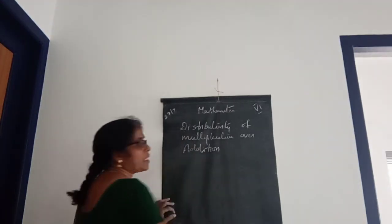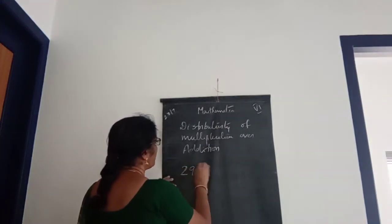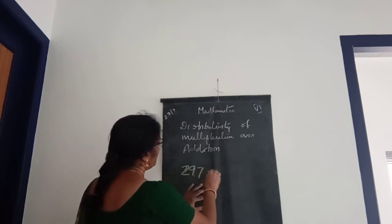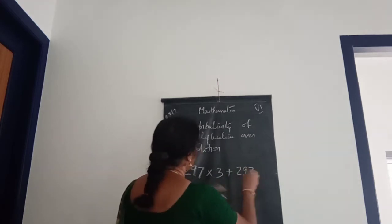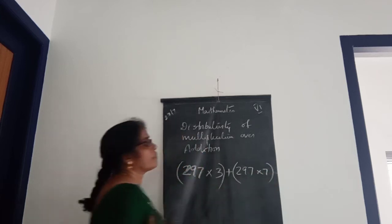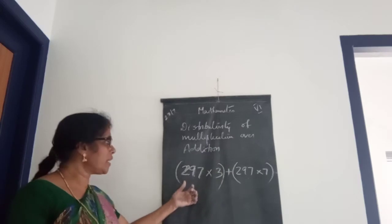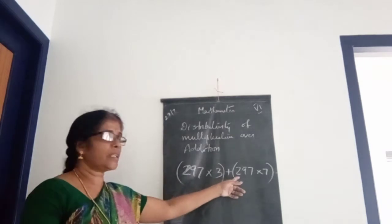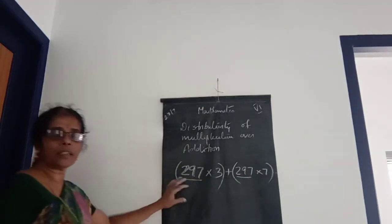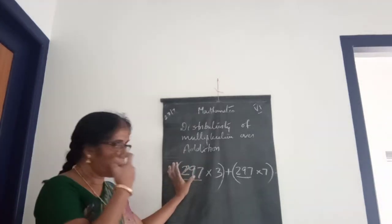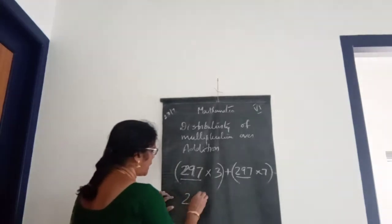But when we are taking larger numbers, we can do it easily by use of the distributive property. Look at this: 297 into 3 plus 297 into 7. Here 297 into 3 will take some time, and 297 multiplied by 7 will also take time. But look here — which one is the common number in the two brackets? In the first bracket it is 297 multiplied with 3, and here 297 multiplied by 7. So we can take that common number 297 out.